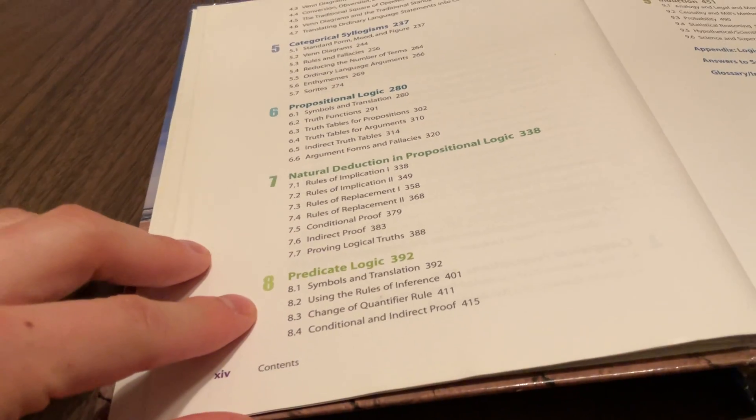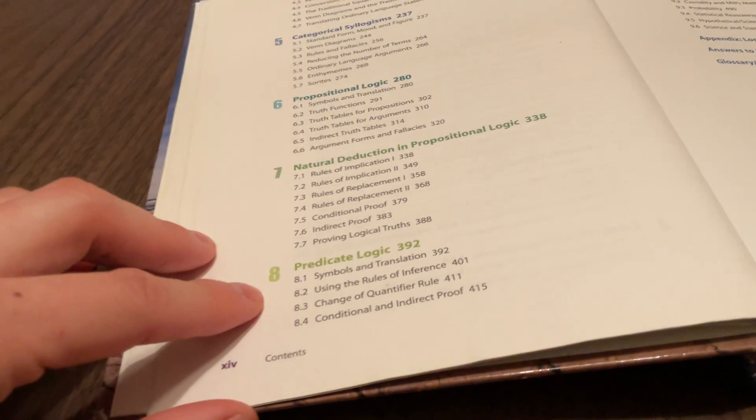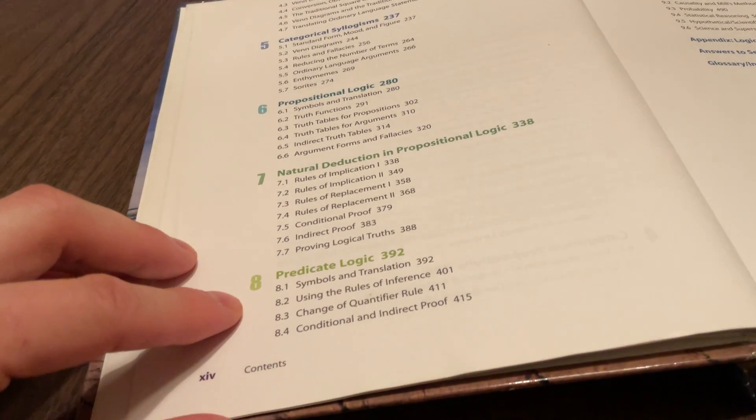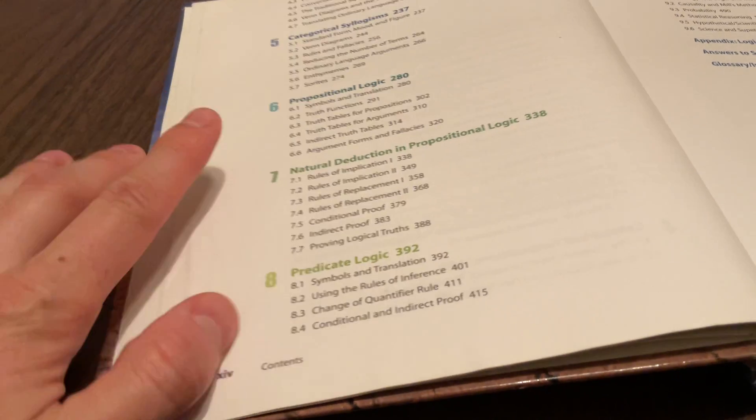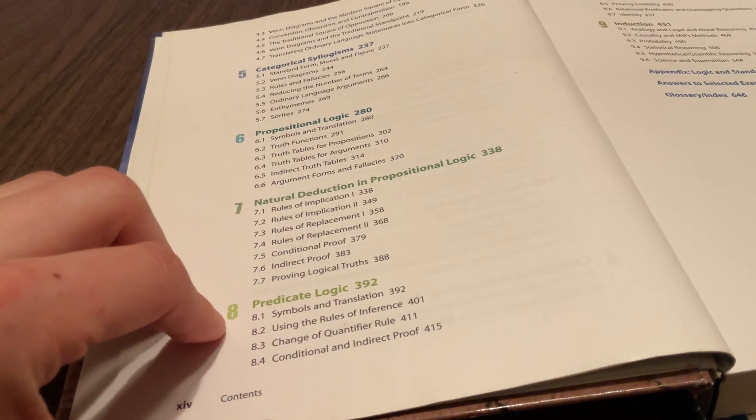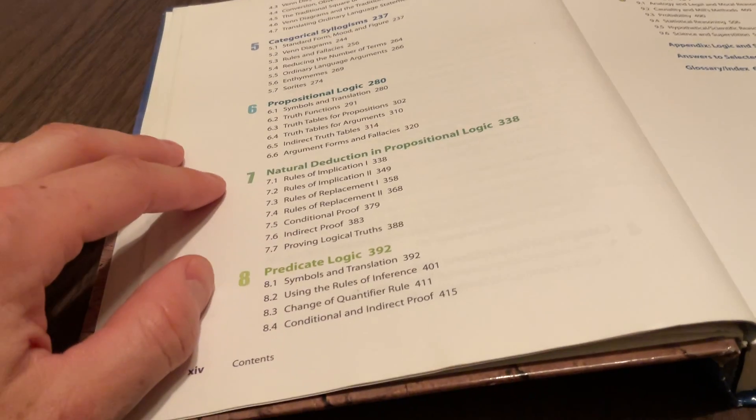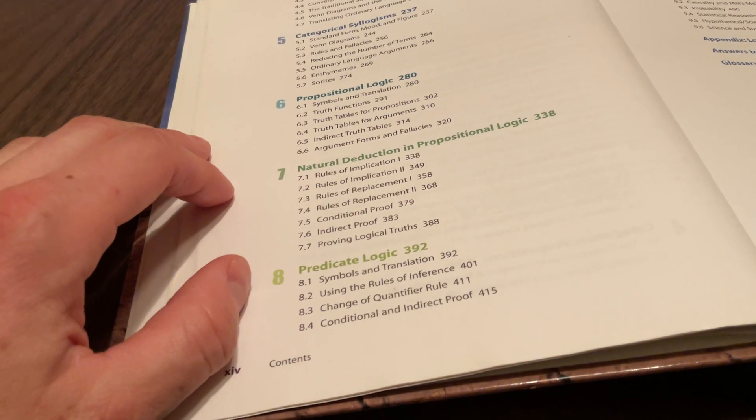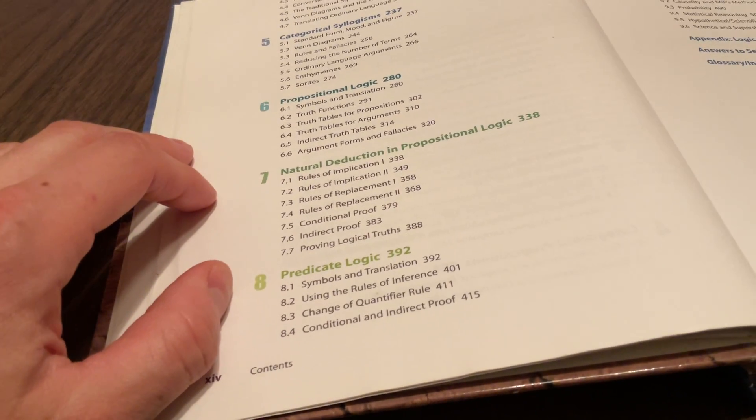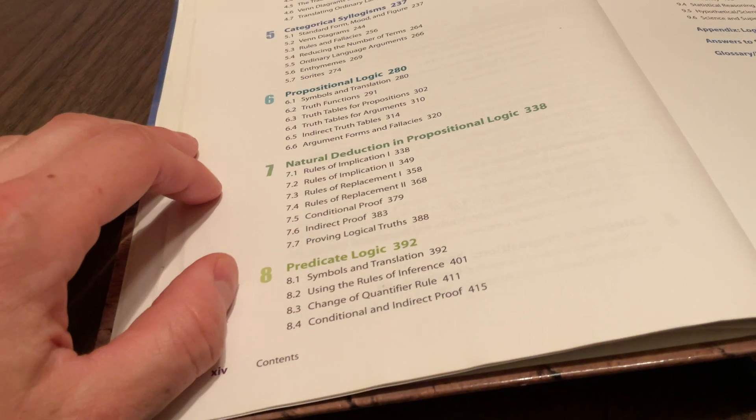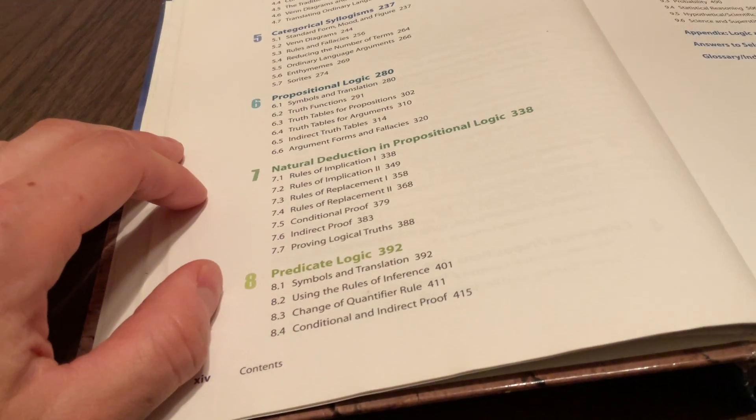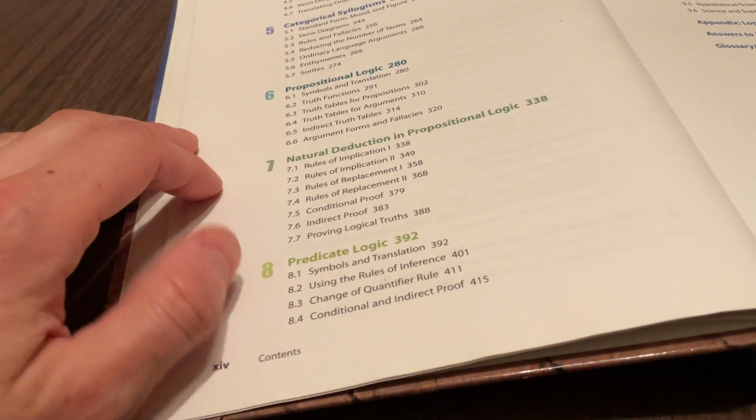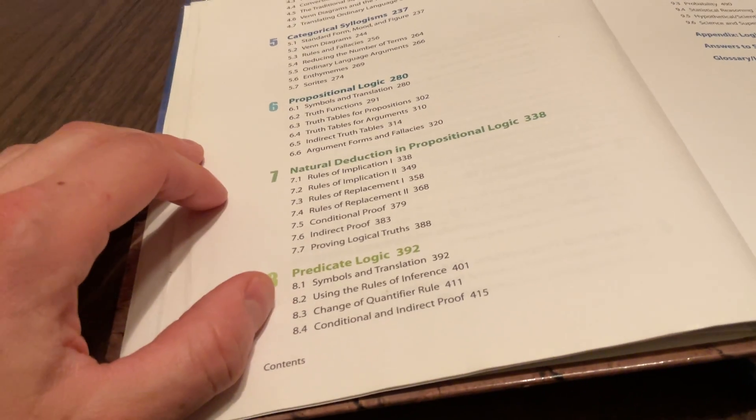And then predicate logic. Here we have quantifiers. You can deal with categorical syllogisms in predicate logic. You can't deal with them in propositional logic. For example, all men are mortal—in propositional logic, you can only represent that entire proposition with just one letter. There's not much you can do with it. You can only relate it via various sentential connectives like and, or, if-then, or if-and-only-if. But you can represent 'all men are mortal' in predicate logic in a robust sense.